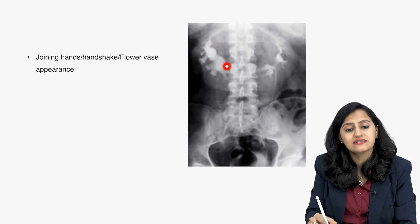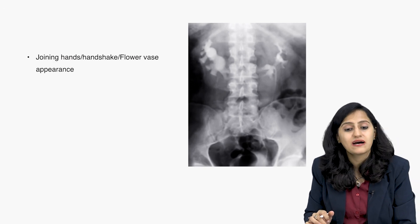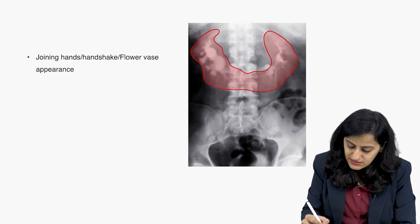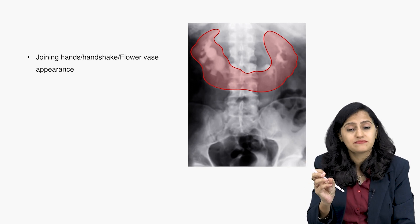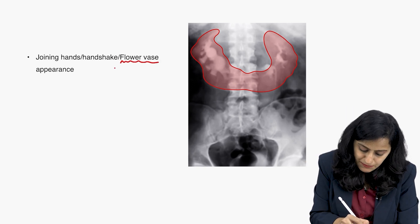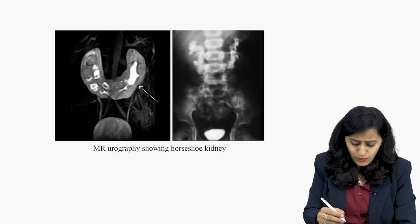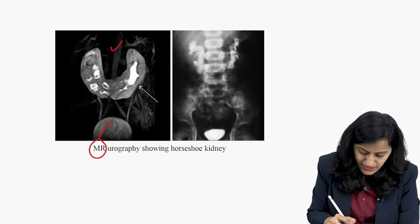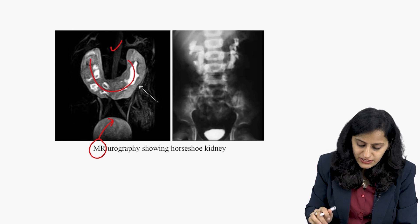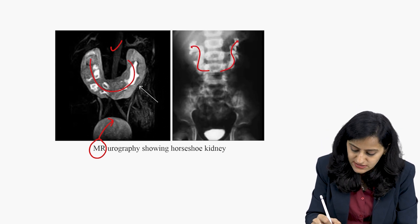On IVP in horseshoe kidney, one kidney joins the other — this gives a joining hands, handshake, or flower vase appearance. The two kidneys are coming towards the midline and joining together, called the flower vase appearance or handshake appearance. This other investigation showing the two kidneys fused together is MRI, because you don't see the white bones.